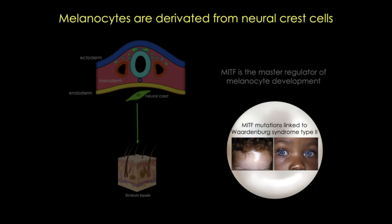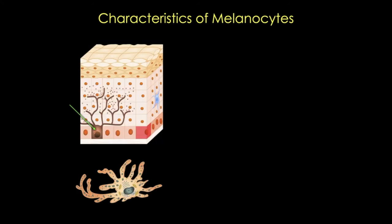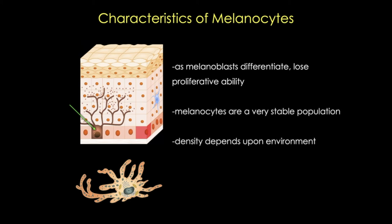Melanocytes reside in the basal cell layer of the epidermis. There's a stem cell population, though the location isn't entirely clear. Some studies suggest that hair follicle melanoblasts give rise to epidermal melanocytes, but it's not fully established. Like most progenitor cells, melanoblasts lose their ability to proliferate as they differentiate into melanocytes. Unlike keratinocytes, melanocytes are long-lived in the epidermis and represent a very stable population.